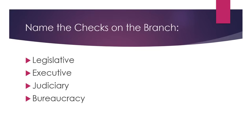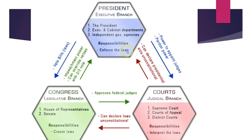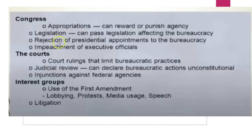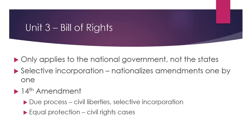Pause this for a moment and see if you can name the checks on each branch. And here you see them — it's really important to know these checks. In terms of the checks on the bureaucracy, you see some from Congress, especially with legislation and appropriations. The courts always have judicial review. Even interest groups play a role, even though they're not a branch. And of course the executive branch plays a big role even in appointments.